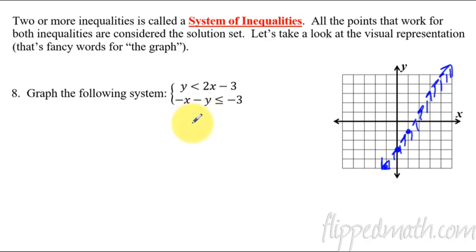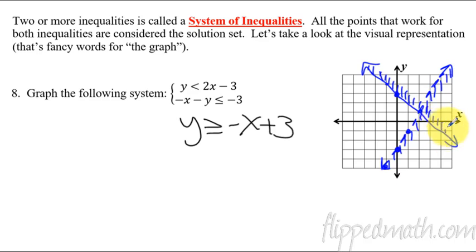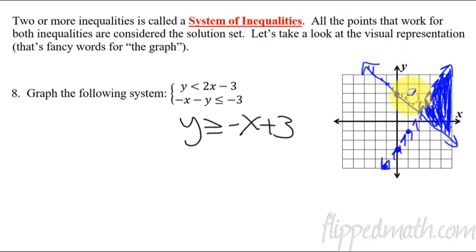Now graph the other line: y is greater than or equal to negative x plus 3. Y-intercept of 3, negative slope, down 1 over 1 — this is a solid line. Since it says greater than or equal to, I put my pencil on the line and lightly make marks above the line. Our answer is where they overlap — this right here is where they overlap. That's what we shade in really dark. The other light marks are not part of the solution, so you do them lightly in pencil so you can get rid of them. This is the only solution: a dashed line, a solid line, and the overlapping shaded region.